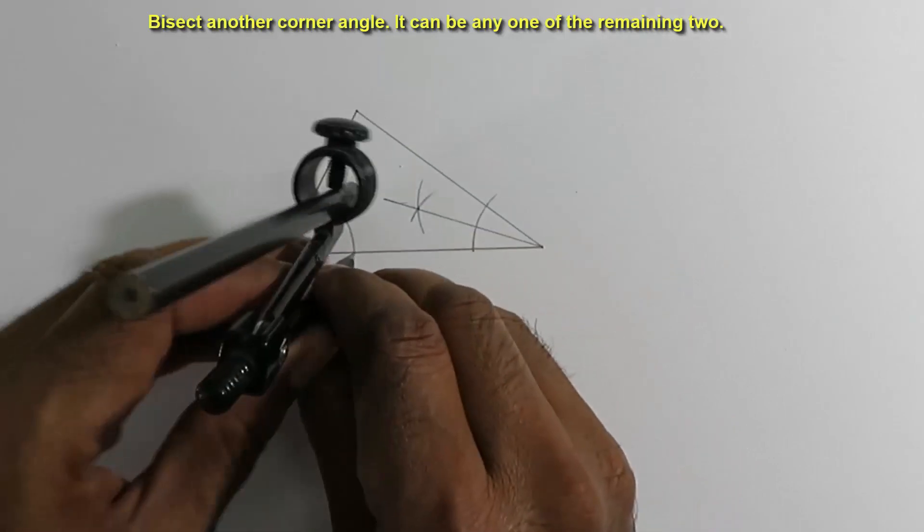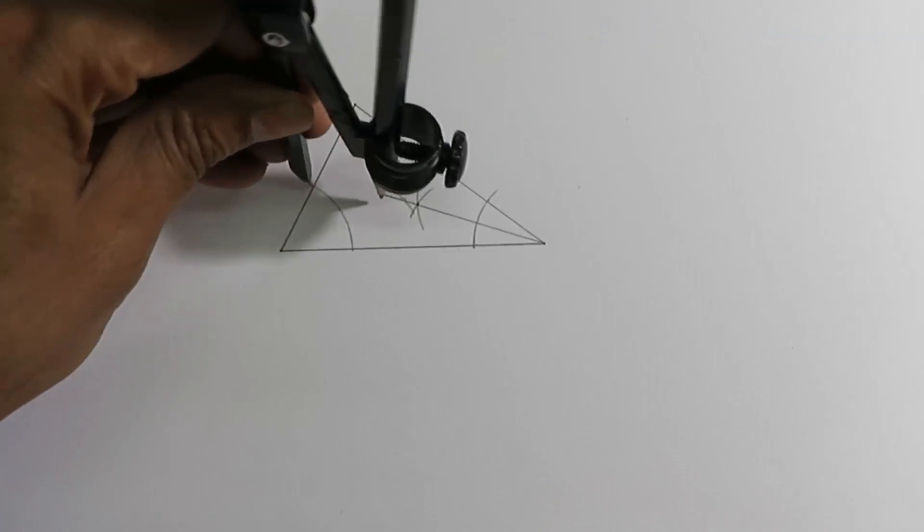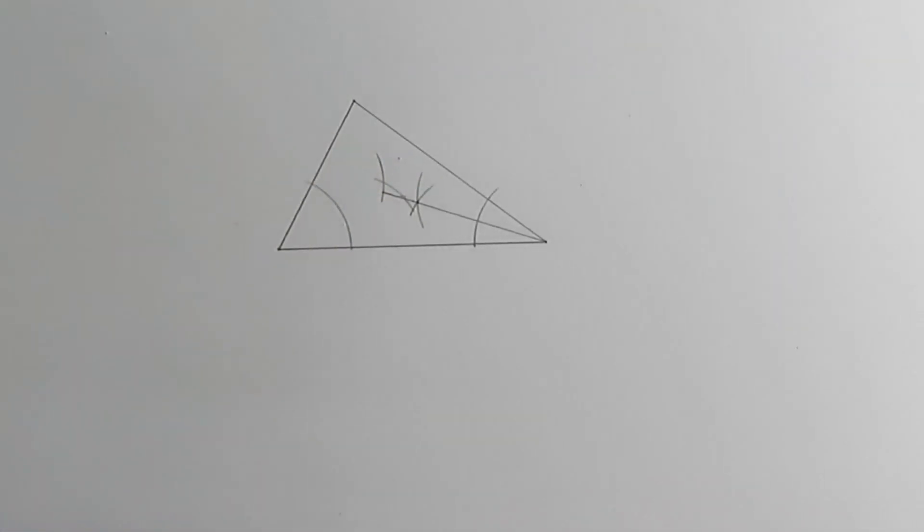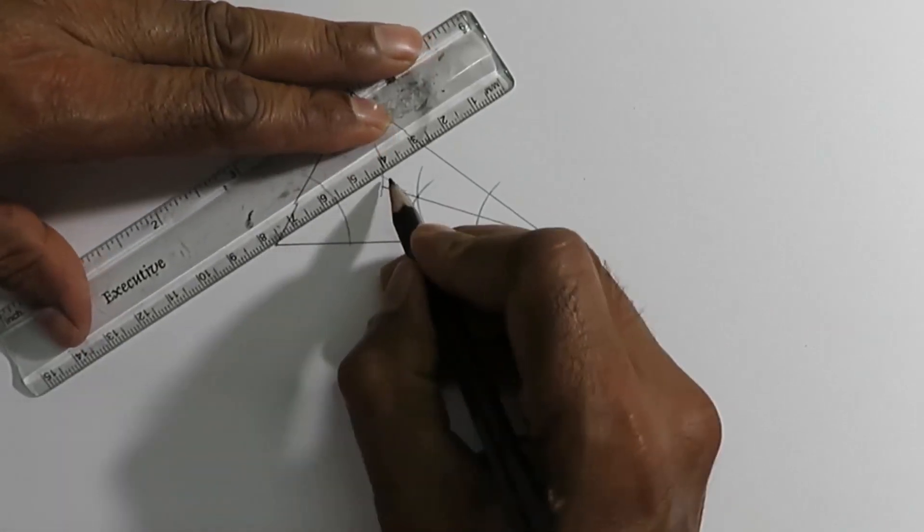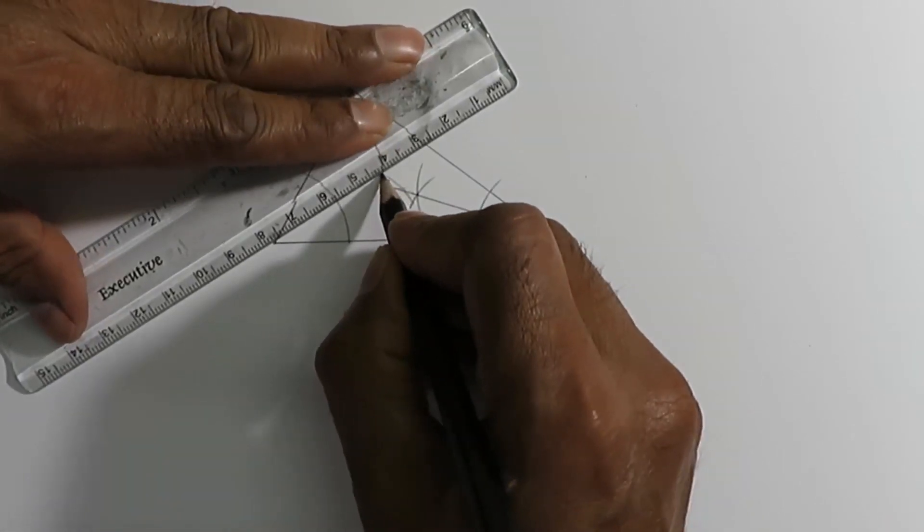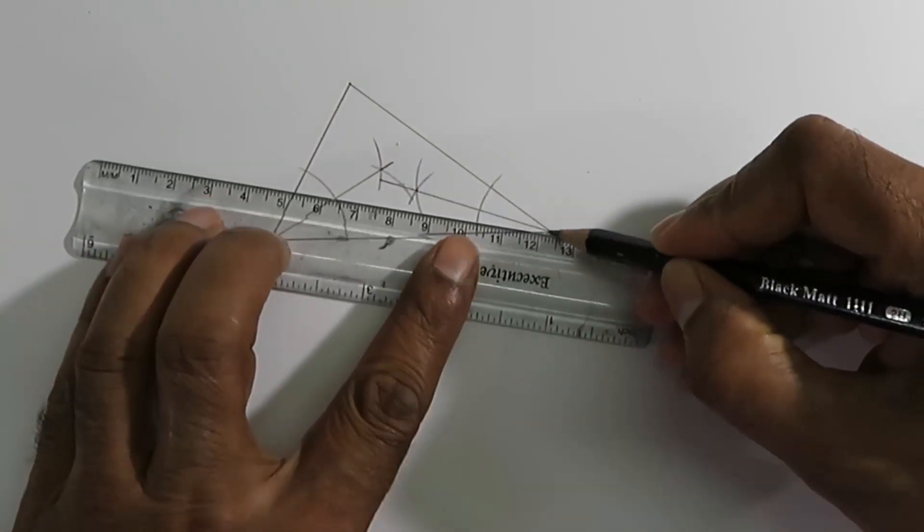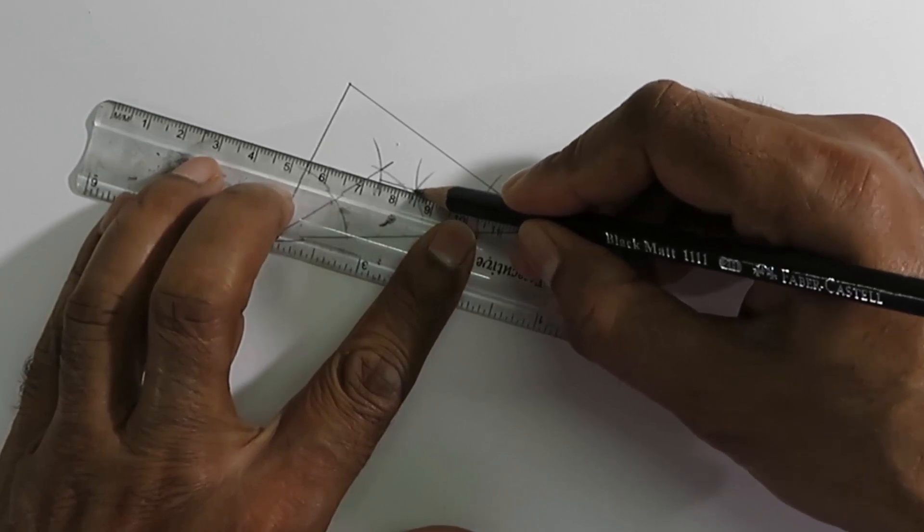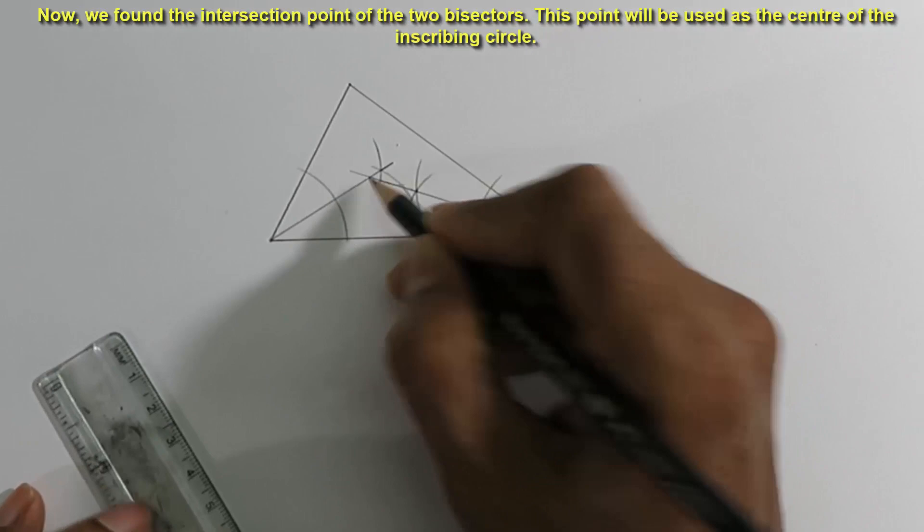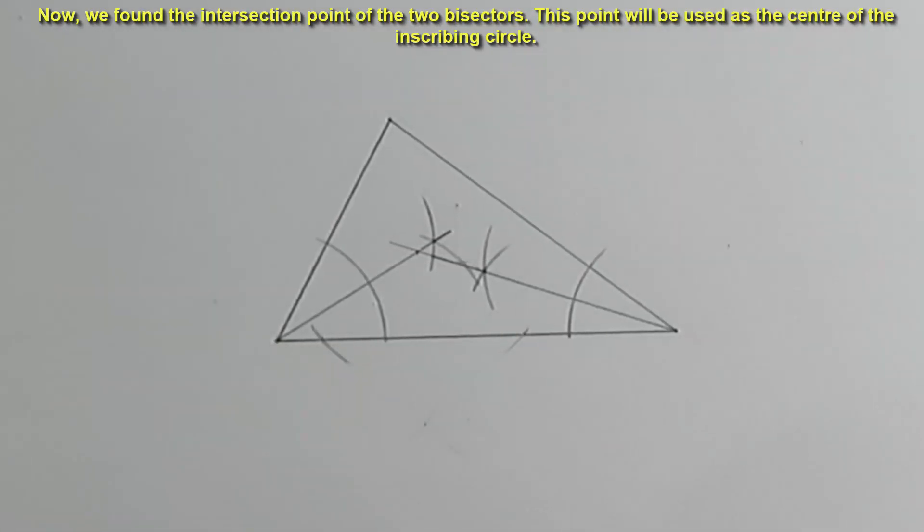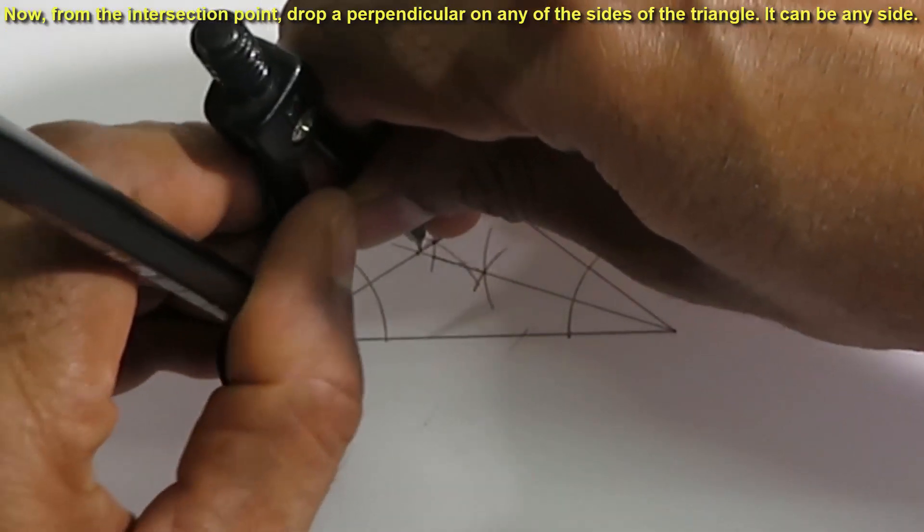Bisect another corner angle. It can be any one of the remaining two. Now, we found the intersection point of the two bisectors. This point will be used as the center of the inscribing structure.